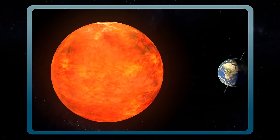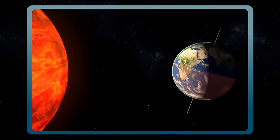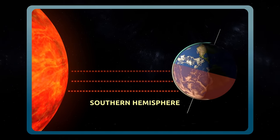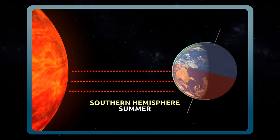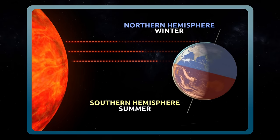The opposite will occur in six months. Sunlight will reach the southern hemisphere in a more direct way and it will be summer, while in the northern hemisphere it will be winter.